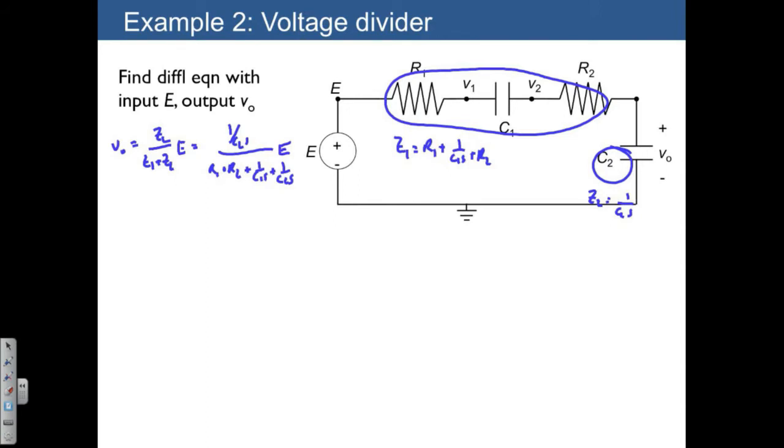I'm going to rewrite this as R1 plus R2 plus 1 over C1S plus 1 over C2S, quantity multiplied by VO. This is equal to 1 over C2S times E.